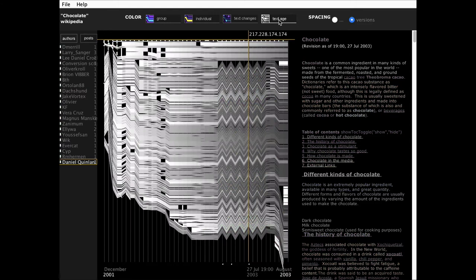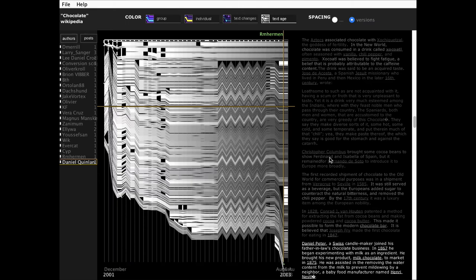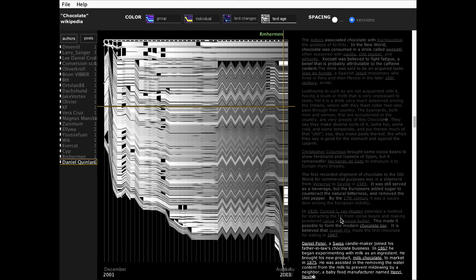Another thing we did is to get rid of the color of the authors and just make text darker, the older it is. Why did we do that? Because on Wikipedia, old text is probably a proxy for good quality, high quality text. And indeed, we did find many passages that were quite old and kind of past the muster of the community.